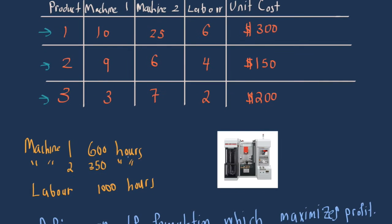We have additional information: we have a capacity of 600 hours with machine one, a capacity of 350 hours with machine two, and a capacity of 1,000 hours for labor. This means we cannot exceed 600 hours for machine one, we cannot exceed 350 hours for machine two, and likewise for labor.